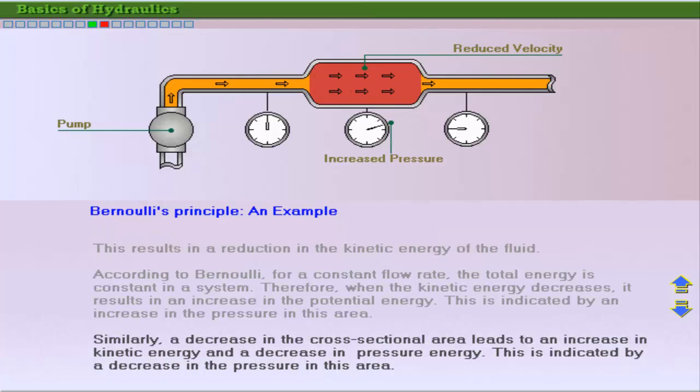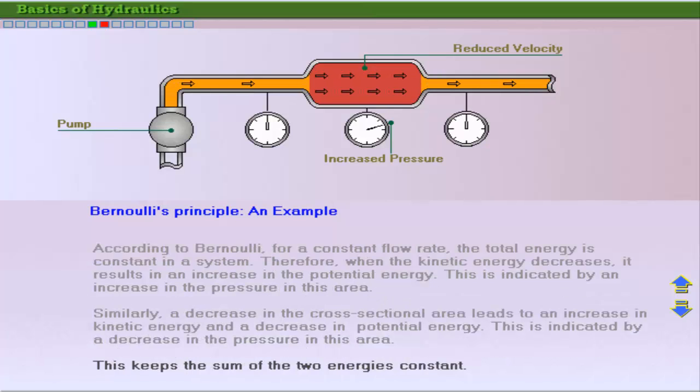Similarly, a decrease in cross-sectional area leads to an increase in kinetic energy and a decrease in potential energy, or pressure. In both cases, it's important to note that the sum of the two energies remains constant.